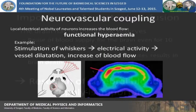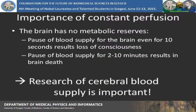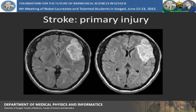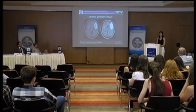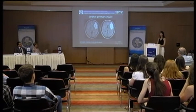The importance of this constant perfusion is that the brain has no metabolic reserves, so a pause of blood supply for 10 seconds can result in loss of consciousness, while a longer pause can end in brain death. According to recent years, cerebrovascular diseases including stroke became the third most frequent cause of death. In the case of ischemic stroke, the primary injury is caused by obstruction of the cerebral artery. The age group at highest risk is the elderly, since the probability of stroke increases with age. Hours or days after the primary injury, a secondary injury can evolve through spreading depolarizations.